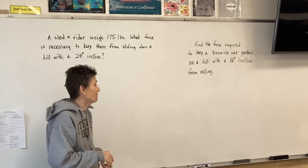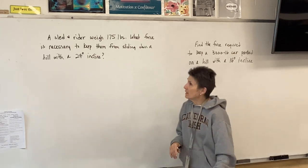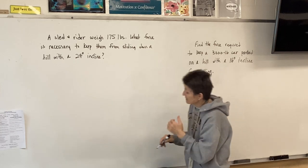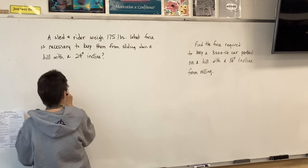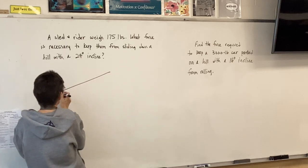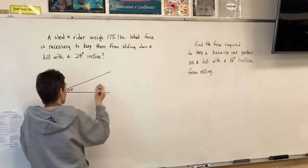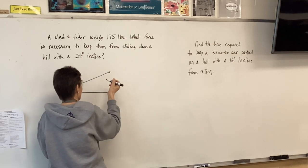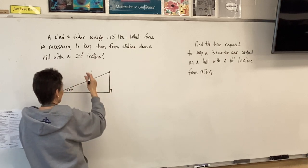I thought we'd do a couple more so that we didn't have to use a bunch of review time in class to do that, so I've written a couple up here. We've got a sled and rider, and they're on a hill. Here's the hill, it has a 24-degree incline. Here's the sled rider sitting there ready to go down the hill. Their gravitational force pulling them straight down is 175 pounds.